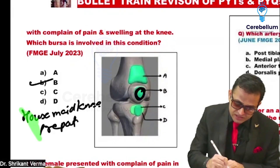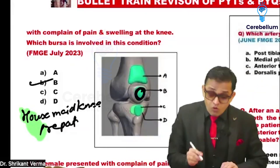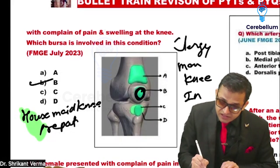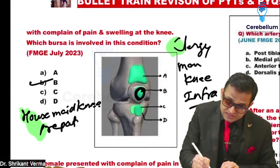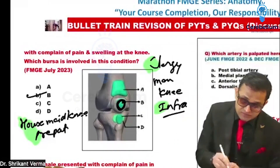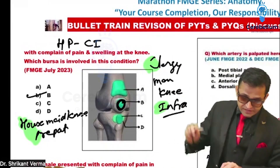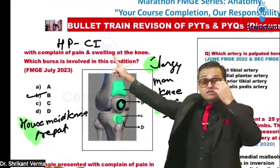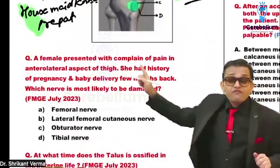Your mnemonic is HP — H for housemaid's knee, P for pre-patellar bursitis. Also remember the clergyman's knee, which is infra-patellar bursitis. Your mnemonic is C and I. So this is one MCQ: HP CI. Housemaid's knee = pre-patellar bursitis; clergyman's knee = infra-patellar bursitis.